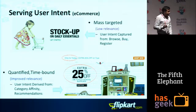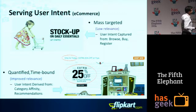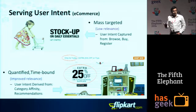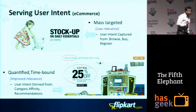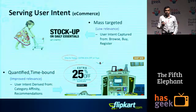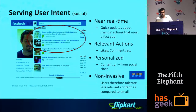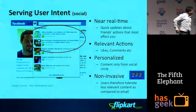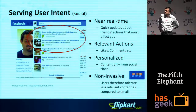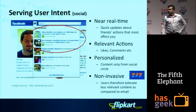The second example is another email from Flipkart saying you can buy school supplies at a certain percentage off, only for today. So it is time-bound, has improved relevance, and is derived from category affinity and recommendations — it's becoming more relevant to a parent around the school season. Then let's look at user intent in a completely different context: social. Facebook likes, and even Myntra has the tagline 'live for likes.'